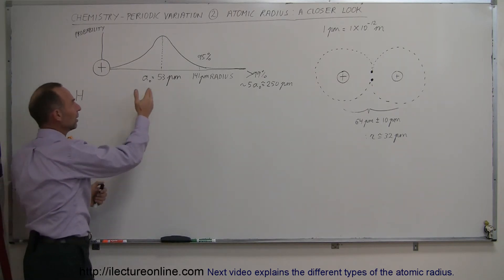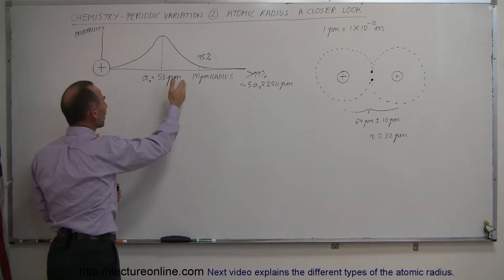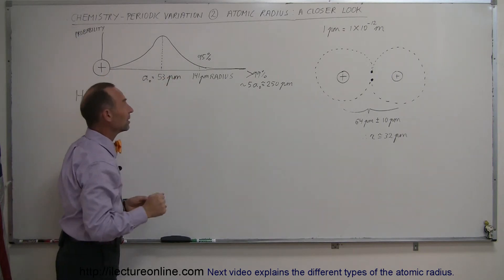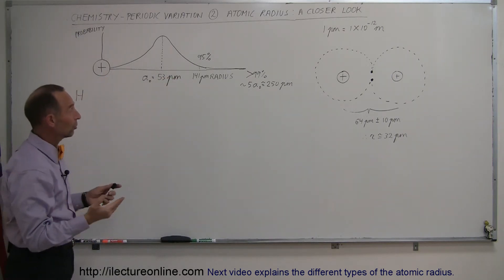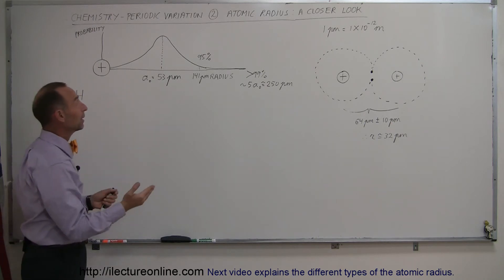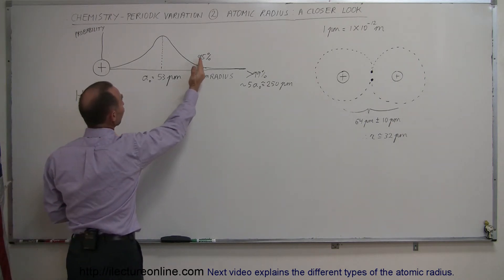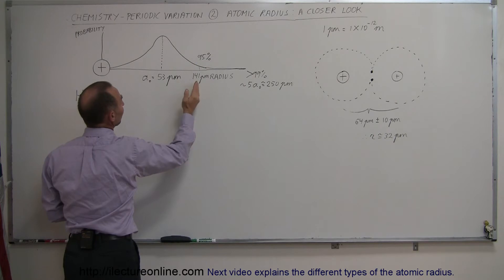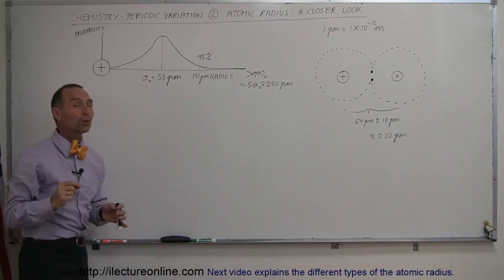But the electron can be found much further away from the nucleus than 53 picometers. Matter of fact, we can be certain to about 95% probability that the electron will spend 95% of its time at a distance less than 141 picometers.